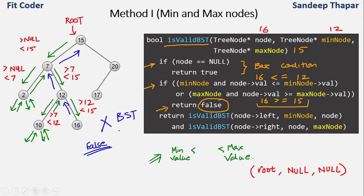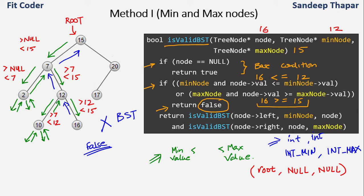In this method we keep track of the min and max node for each subtree and check if the node falls within that range. If any node does not fall in that range, the tree is not a BST. Note: some books or sites use integer values int_min and int_max instead of node pointers, but that approach fails if the tree actually contains values equal to int_min or int_max. It is better to use node pointers initialized to null, which works regardless of the tree's values.